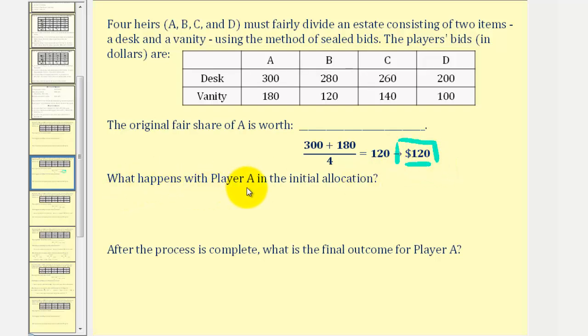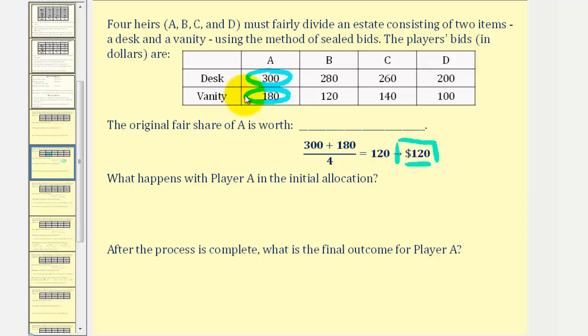Next, what happens with player A in the initial allocation? Let's first identify the highest bids. Notice how for the desk, player A has the highest bid, and for the vanity, player A also has the highest bid. So player A is going to receive both the desk and the vanity.